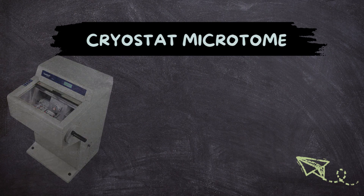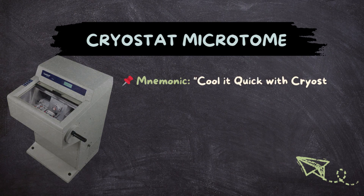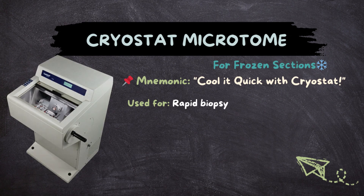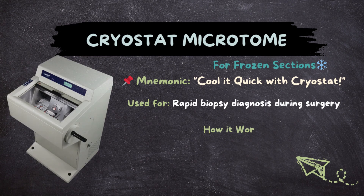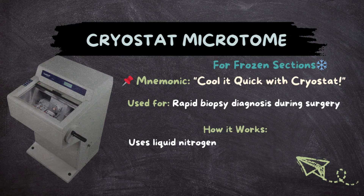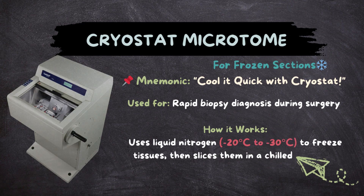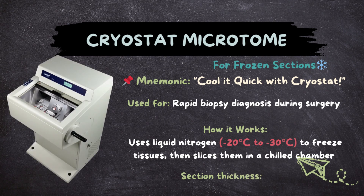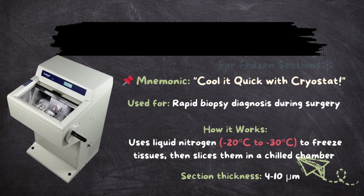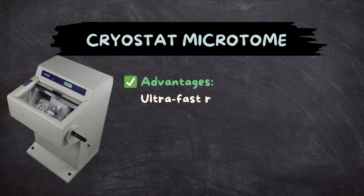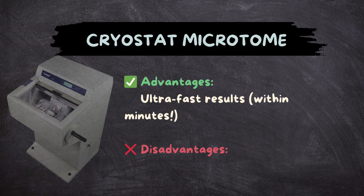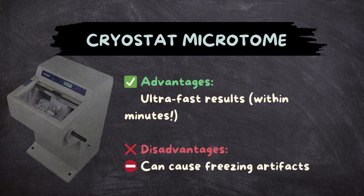Cryostat Microtome — for frozen sections. Mnemonic: 'Cool it quick with Cryostat.' Used for rapid biopsy diagnosis during surgery. Uses liquid nitrogen at -80°C to -30°C to freeze tissues, then slices them in a chill chamber. Section thickness: 4 to 10 micrometers. Advantages: ultra-fast results within minutes. Disadvantages: can cause freezing artifacts.